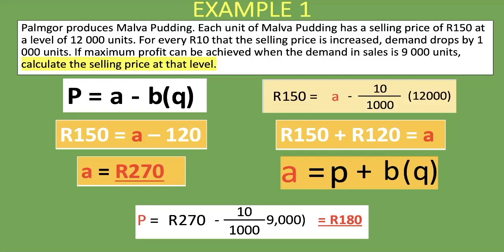To verify the logic: at 150 rand we sell 12,000 units. Increase by 10 rand to 160 rand — units drop to 11,000. Increase by another 10 rand to 170 rand — units drop to 10,000. Increase by another 10 rand to 180 rand — units demanded drop to 9,000. You can see how the formula produces 180 rand at the level of 9,000 units demanded. Let's now look at a more comprehensive example.